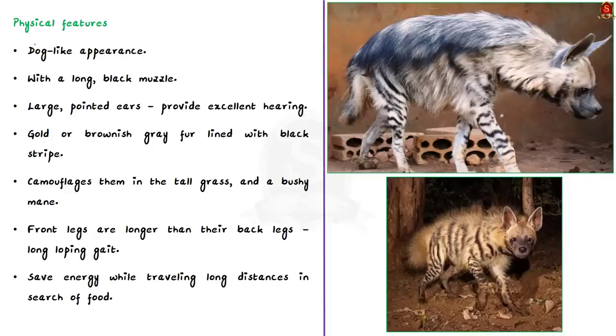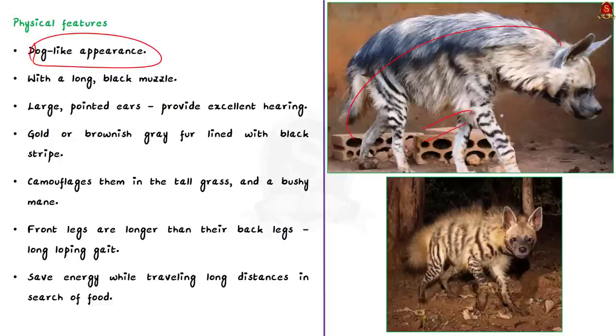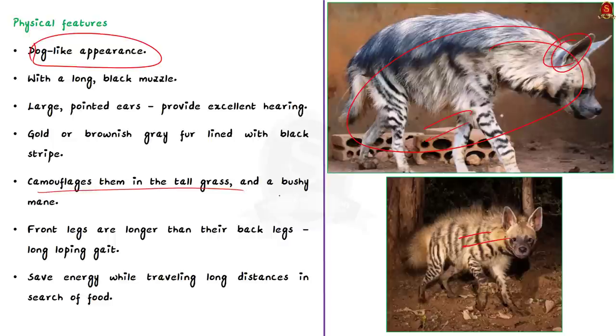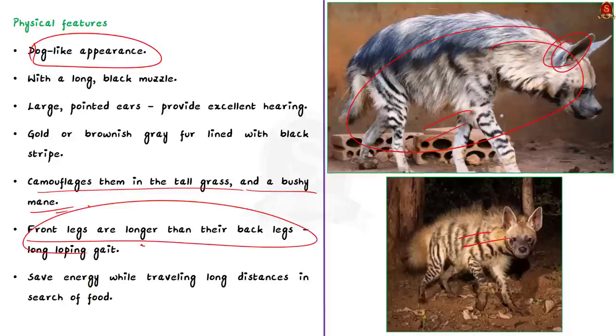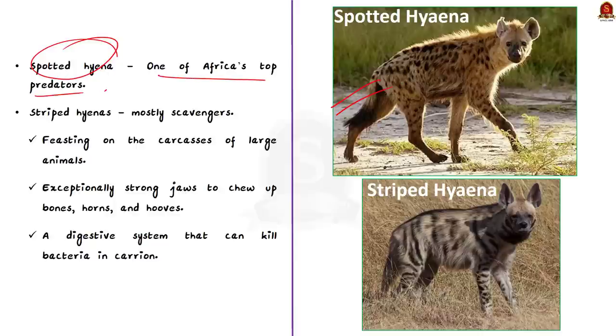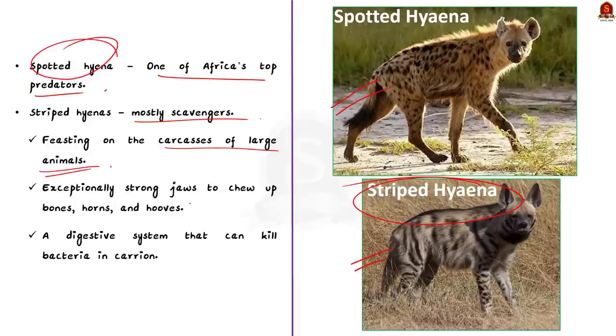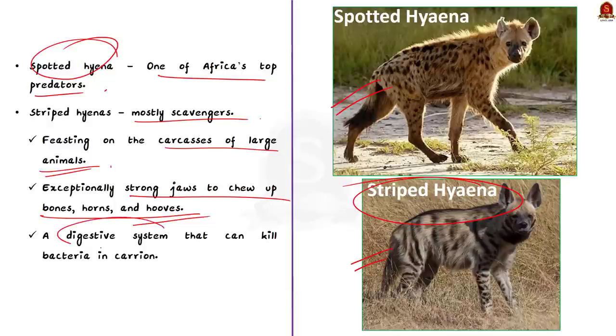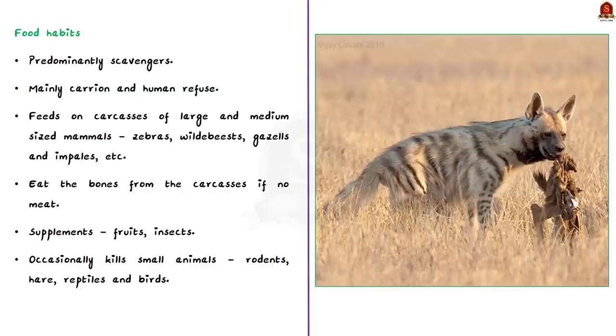Striped hyenas sport a dog-like appearance with a long black muzzle and large pointed ears which provide excellent hearing. Their gold and brownish-gray fur is lined with black stripes that stretch from neck to tail. This camouflages them in the tall grass and a bushy mane. And like spotted hyenas, their front legs are longer than their back legs. This helps them save energy while traveling long distances in search of food. When you take the spotted hyenas, it is one of Africa's top predators. But the striped hyenas are mostly scavengers feasting on the carcasses of large animals. They have exceptionally strong jaws to chew up bones, horns and hooves and has a digestive system that can kill bacteria in carrion.